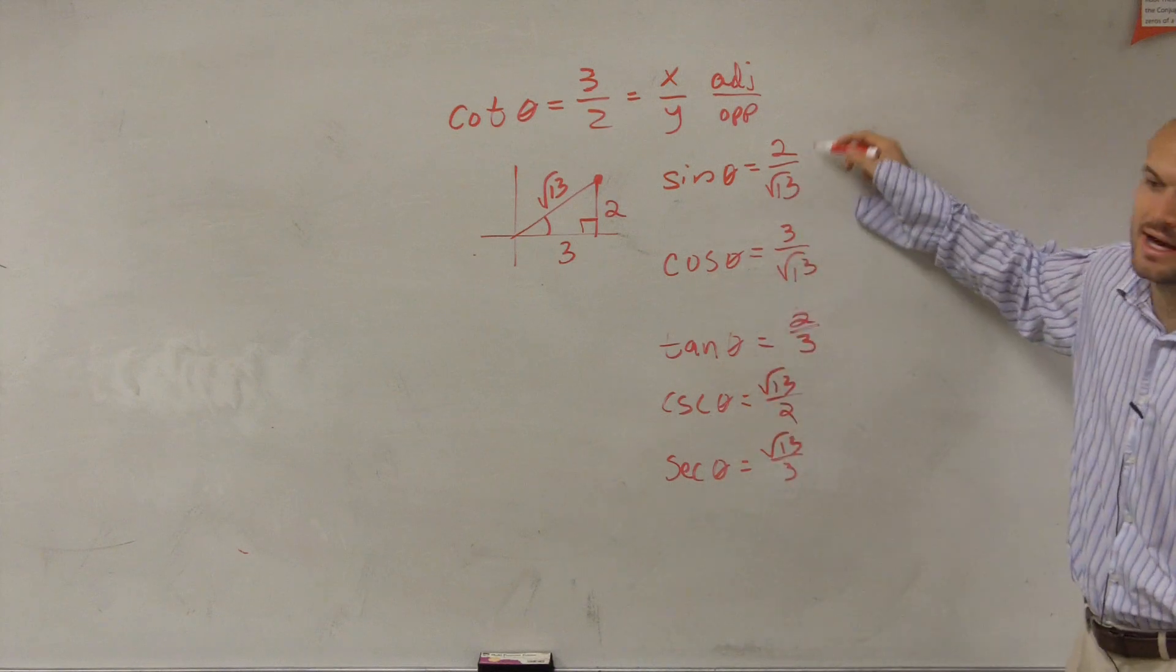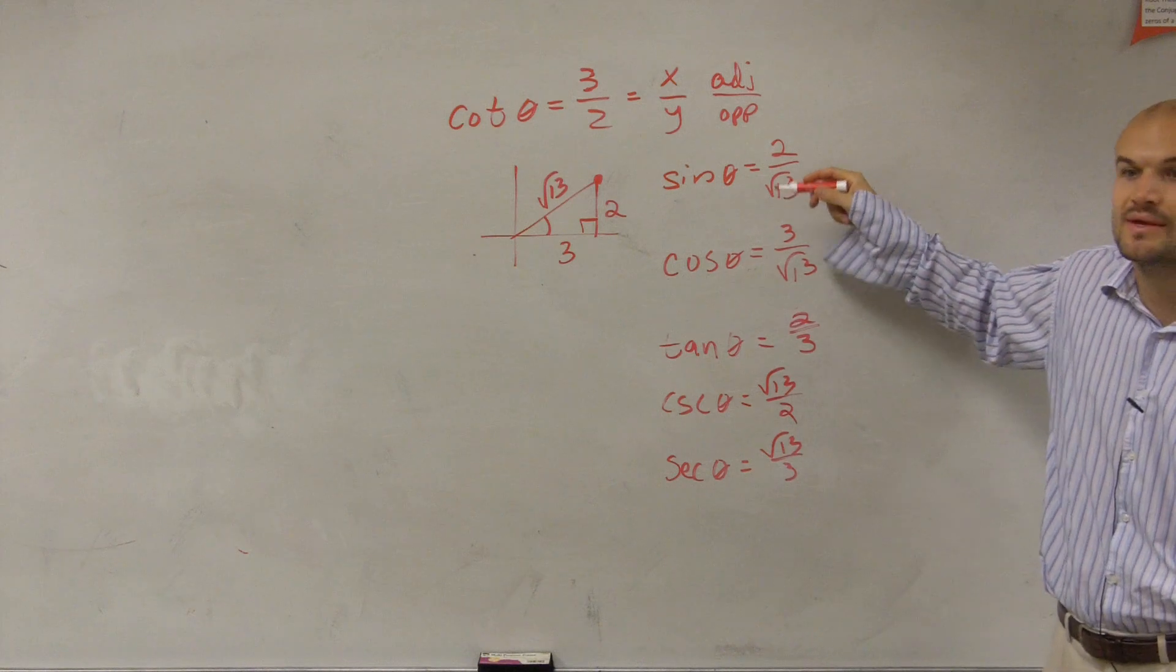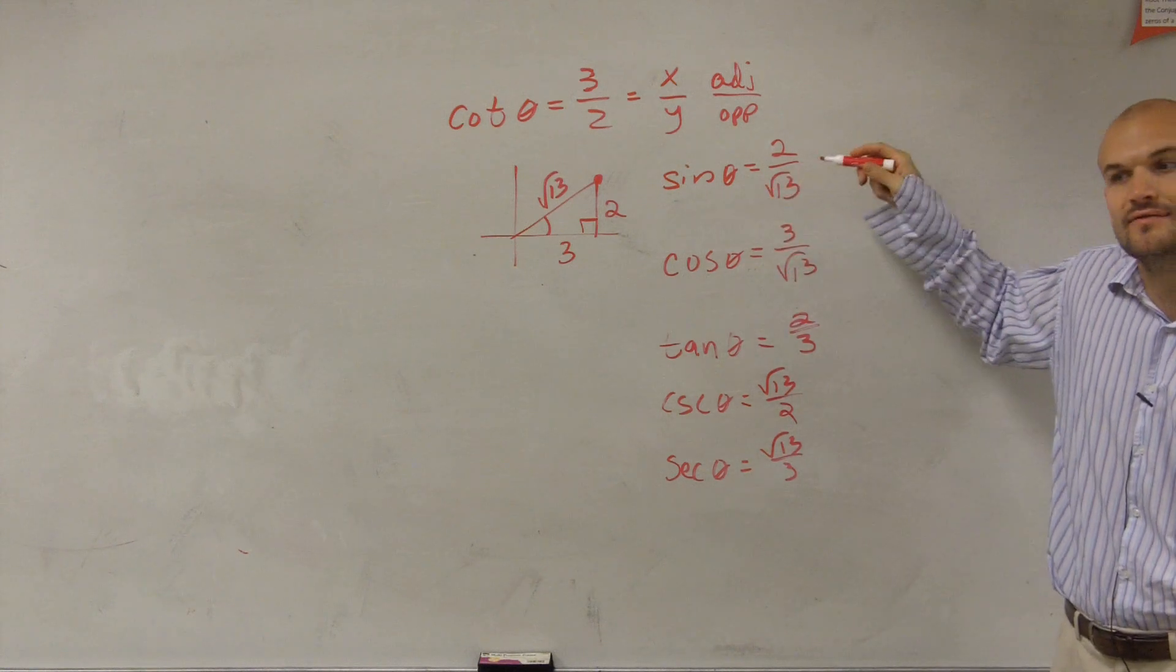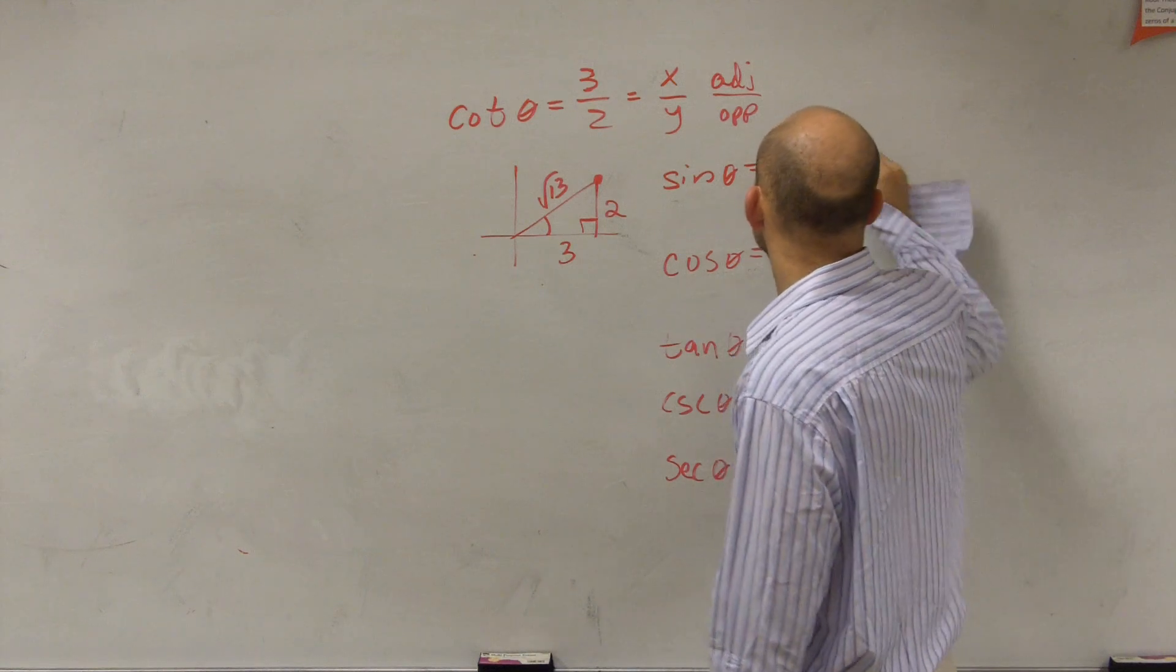Now, we cannot leave our answer like this. Do you remember when I was talking about that? Same thing when we have i on the bottom. You cannot leave i, nor can you leave your square root on the bottom. So, you have to rationalize the denominator.